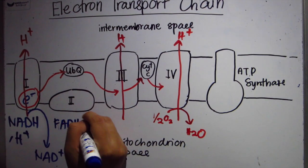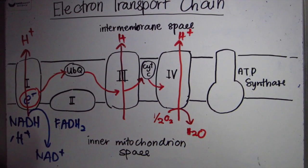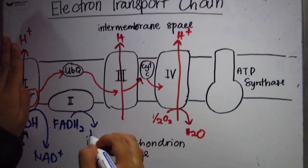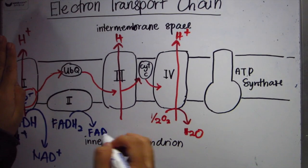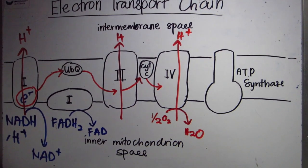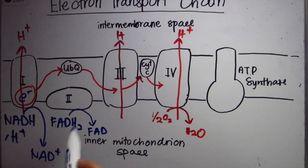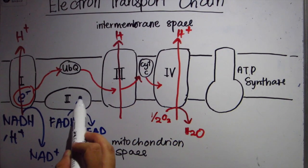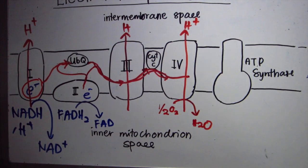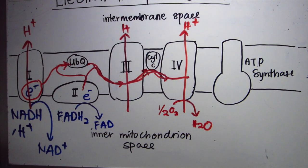After that, FADH2 will skip the complex 1 but it will flow into complex 2, succinate dehydrogenase. The flow itself with the NADH from ubiquinone through complex 4.